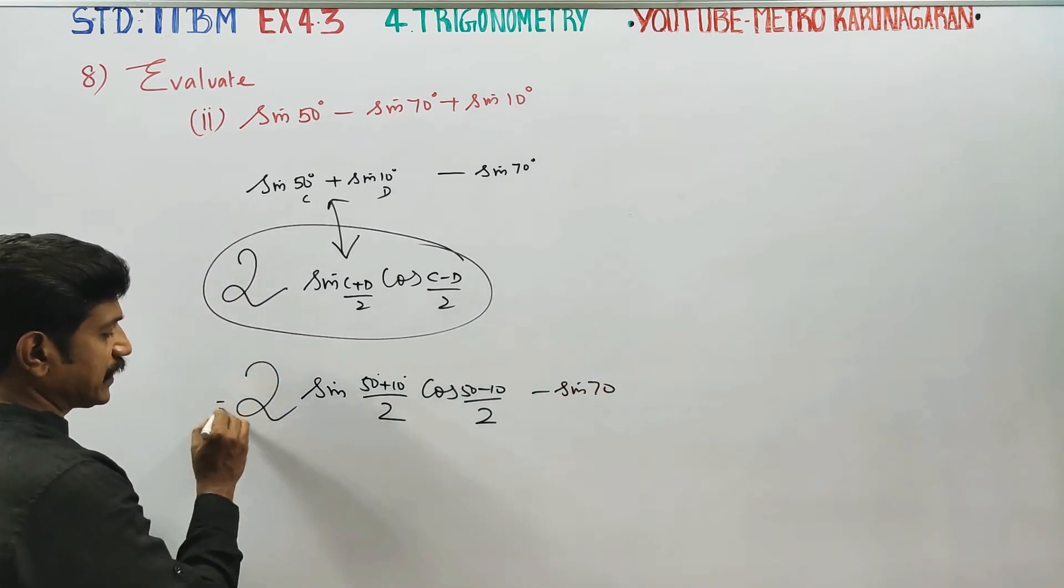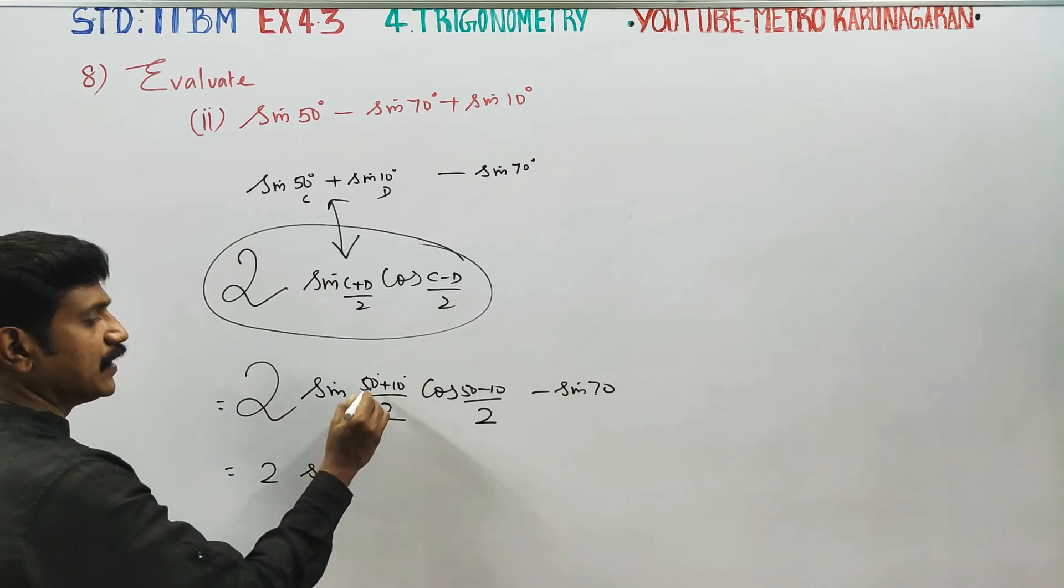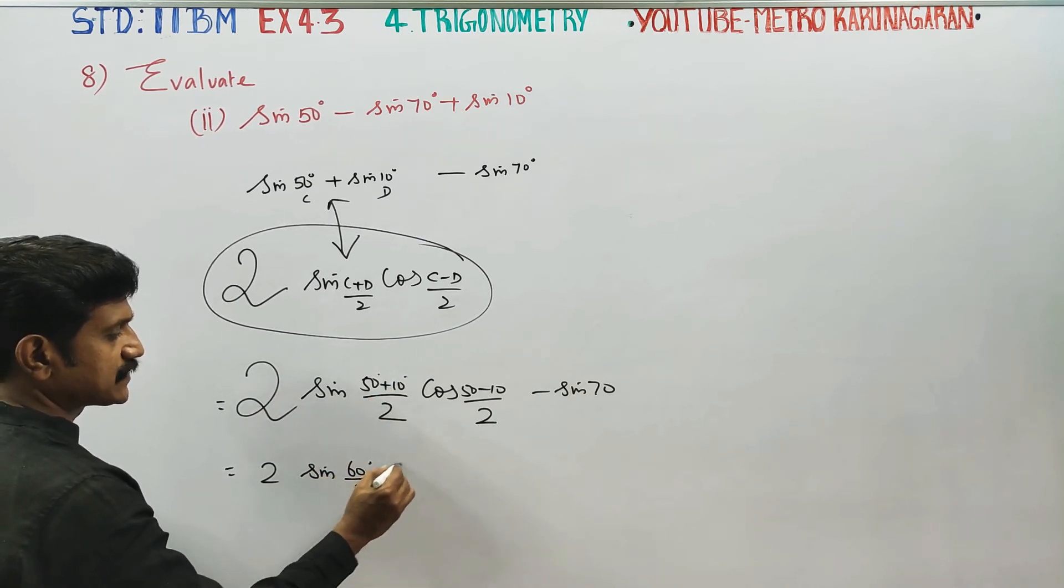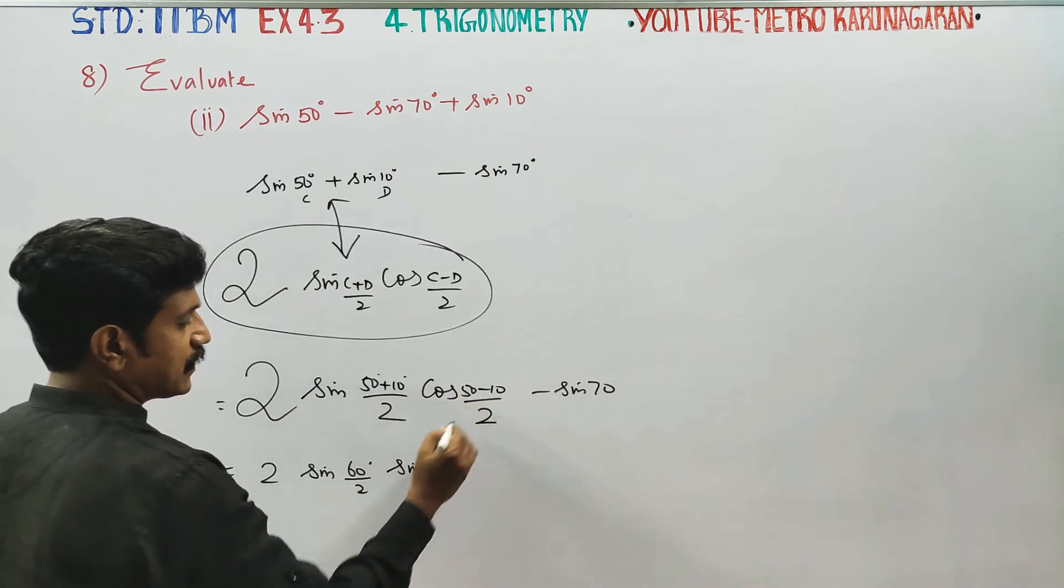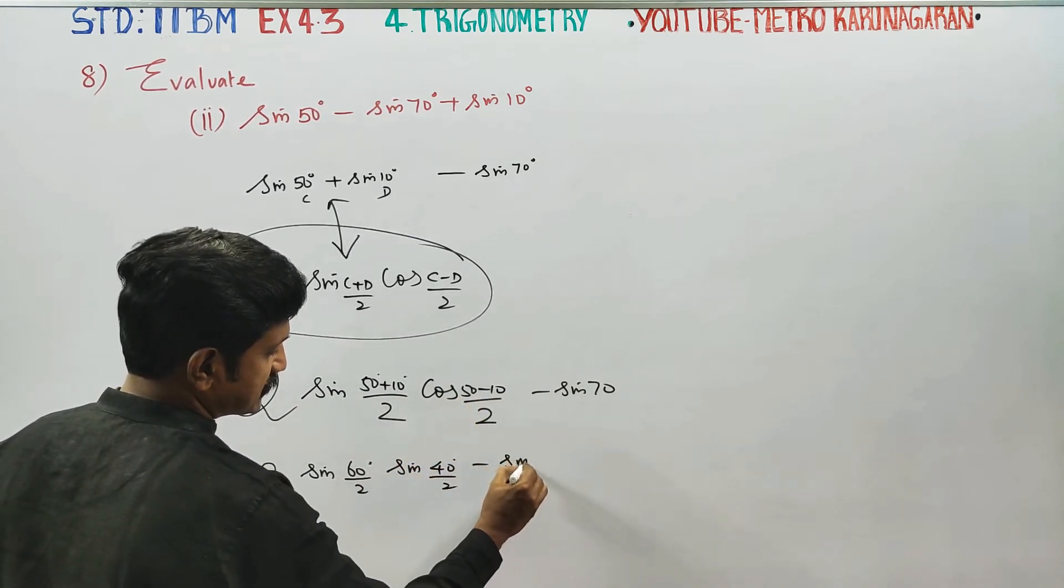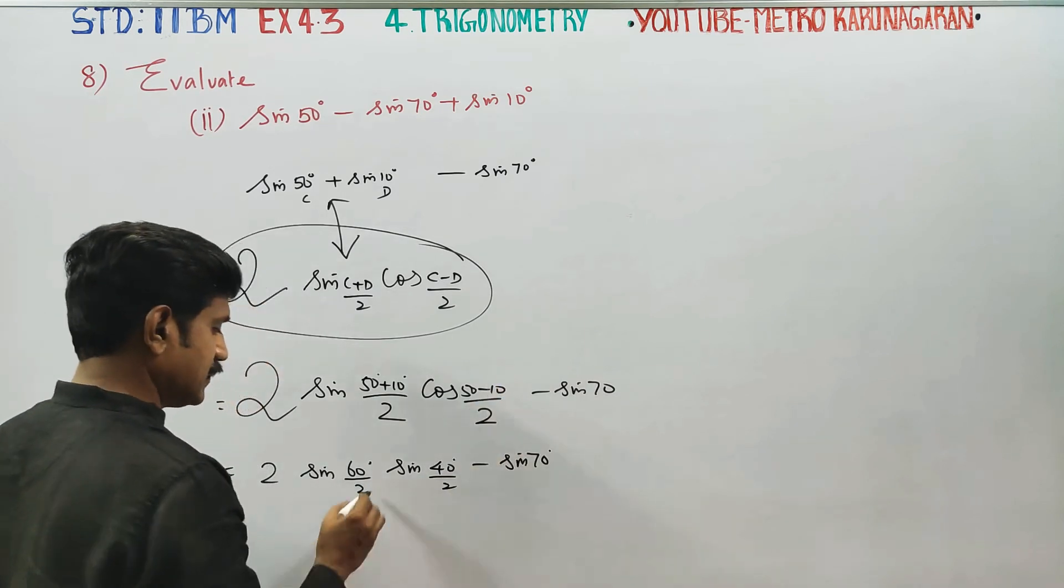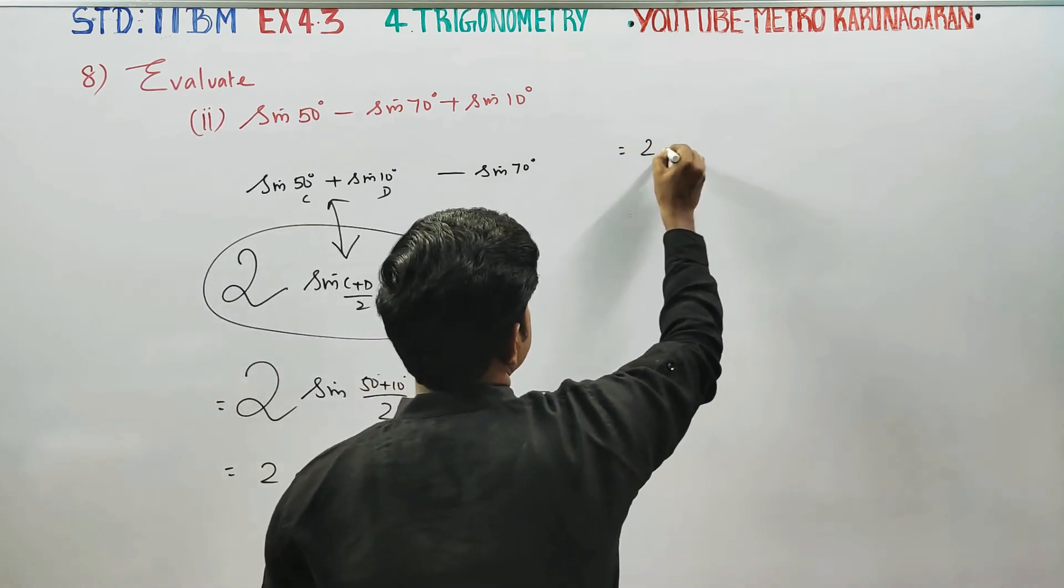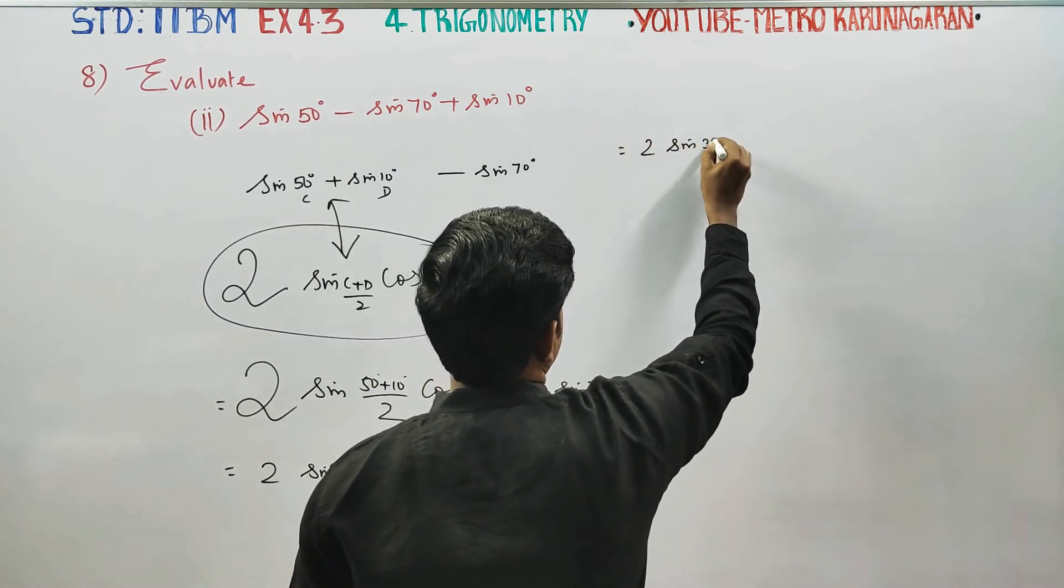This will be 2 times sin 60 by 2, which is sin 30, minus sin 70. 2 times this becomes 30 times. Then the answer will be 2 times sin 30.